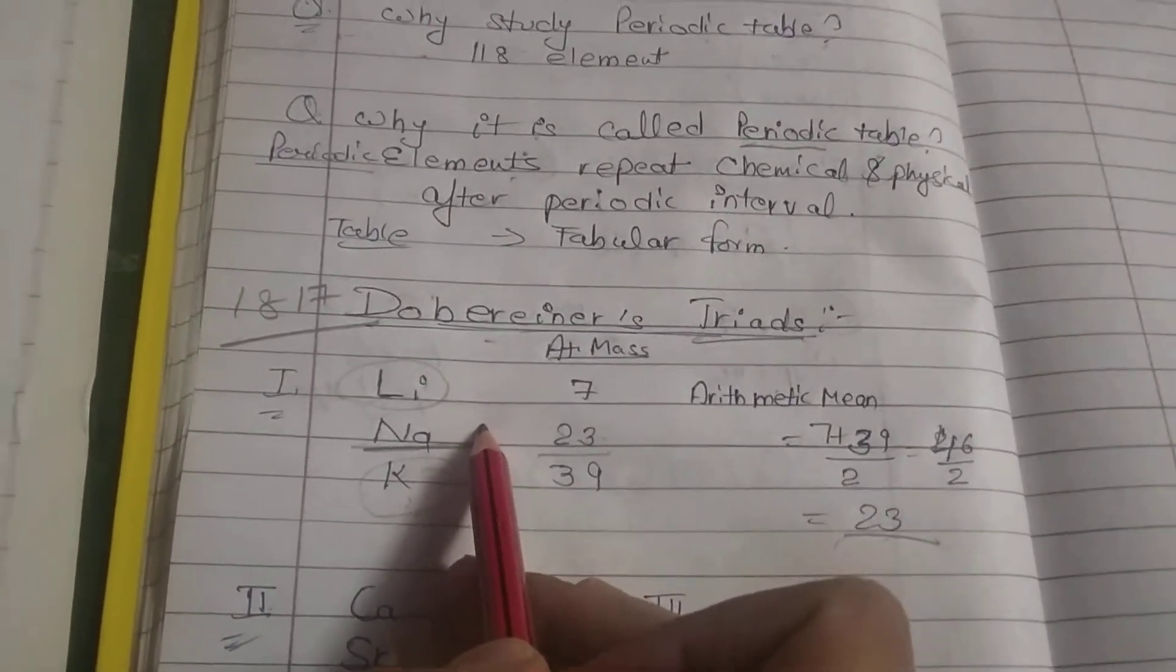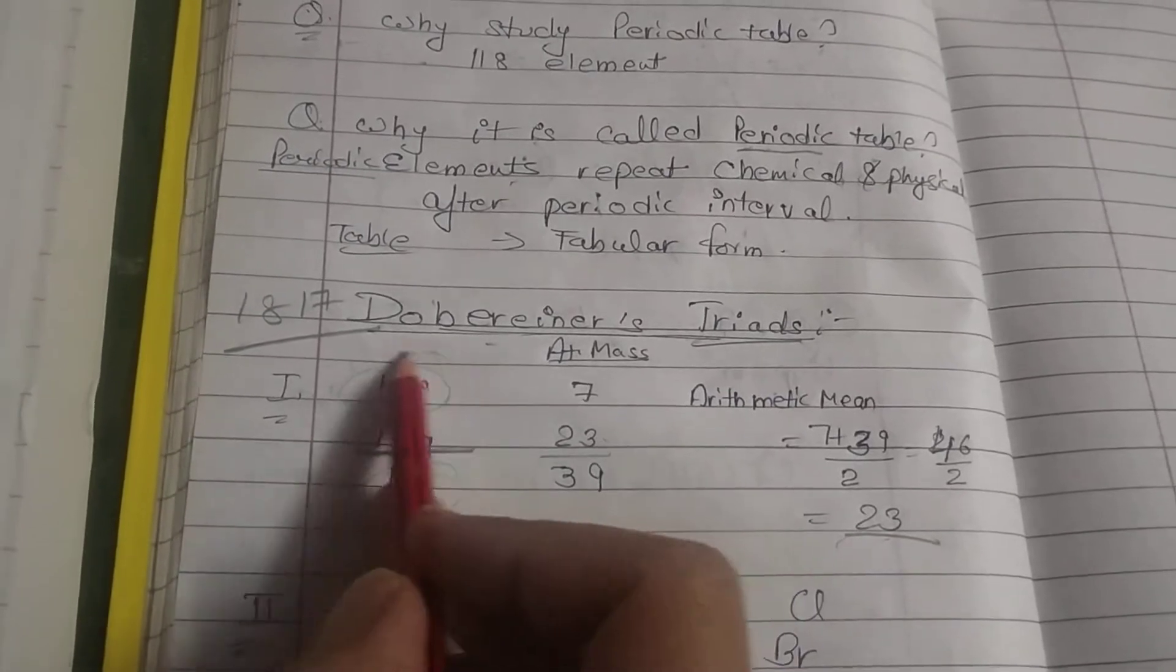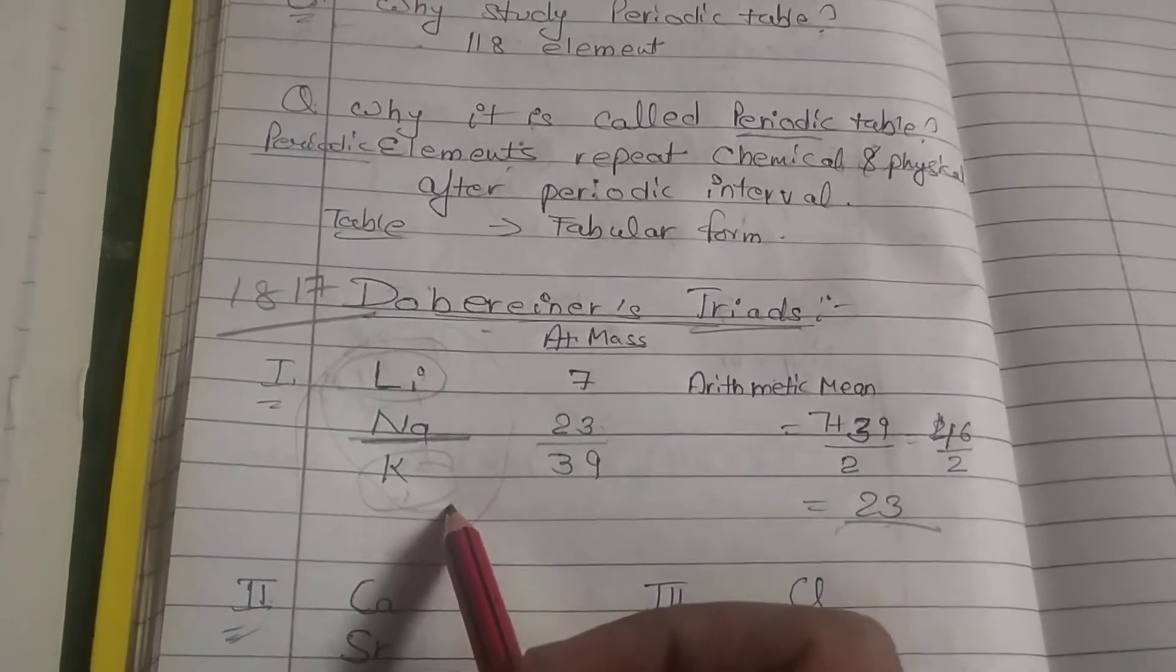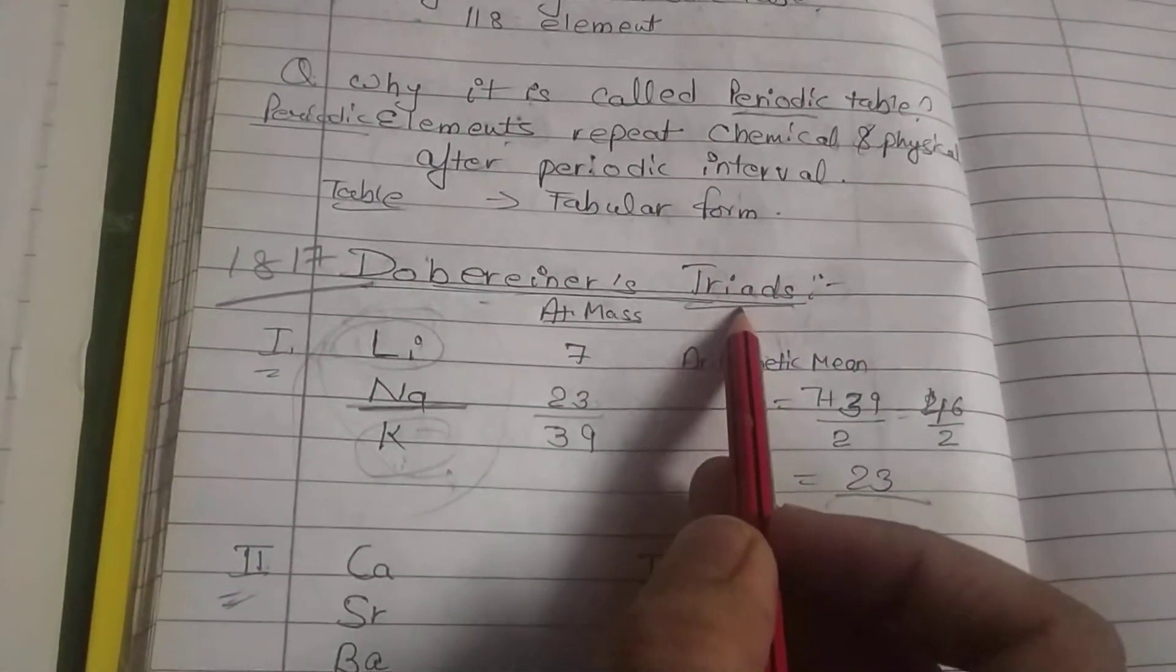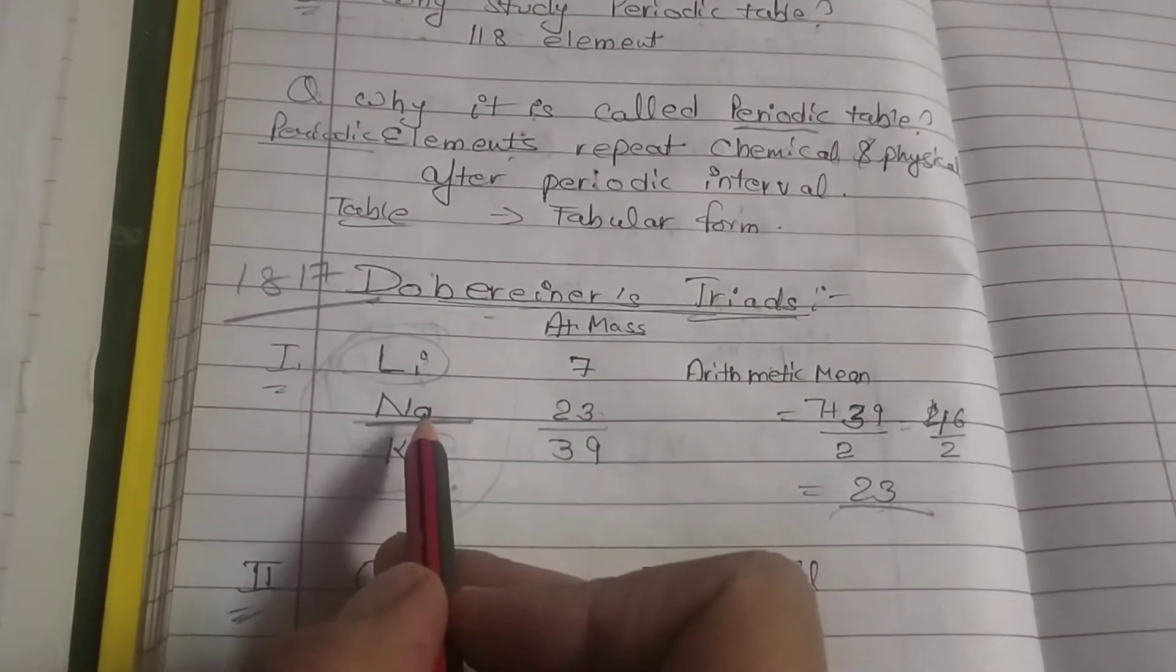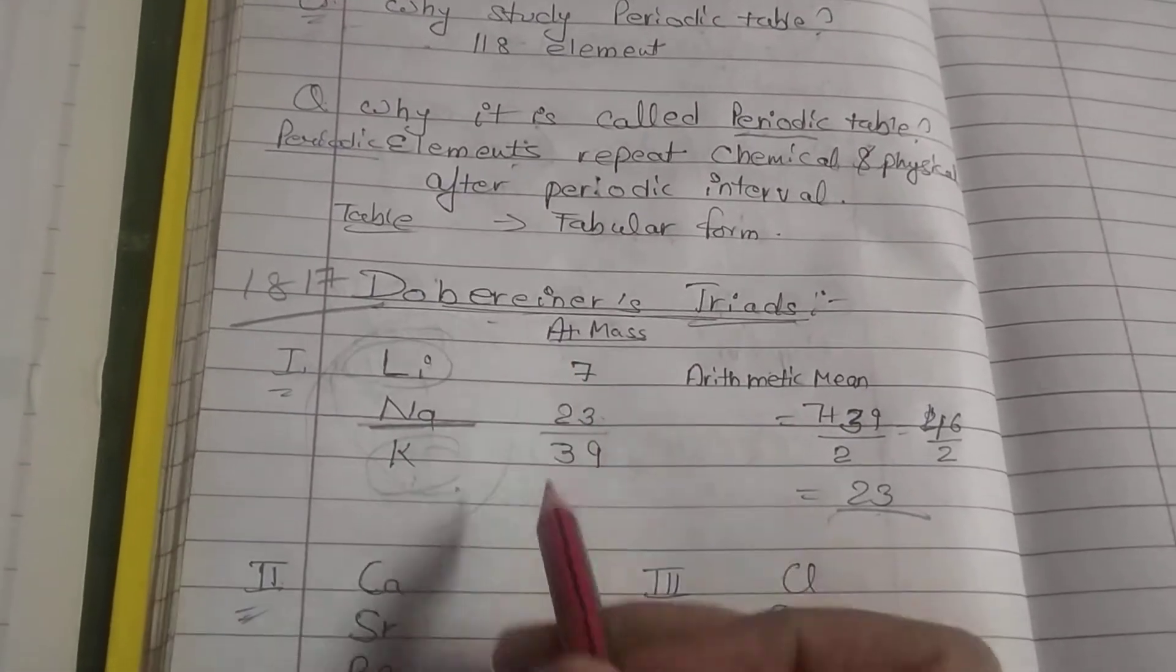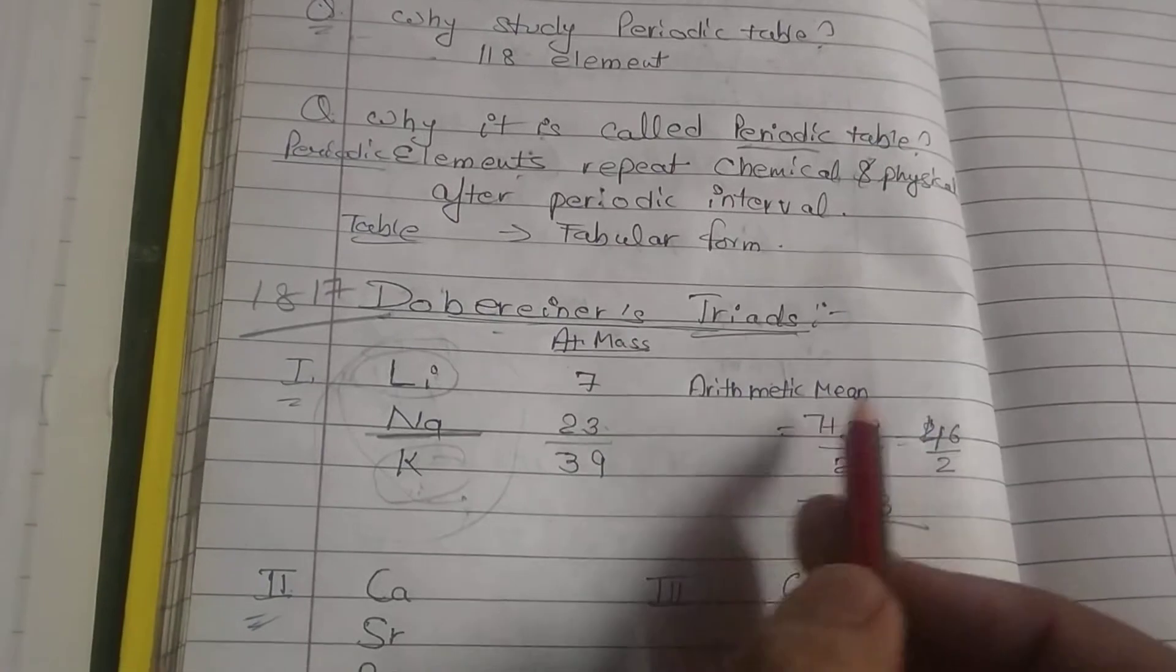Here are the two things. First, the group will have chemical properties that are the same, similar, that is known as triads. Second thing is the middle element's atomic mass equals the arithmetic mean of the other two elements' atomic mass.